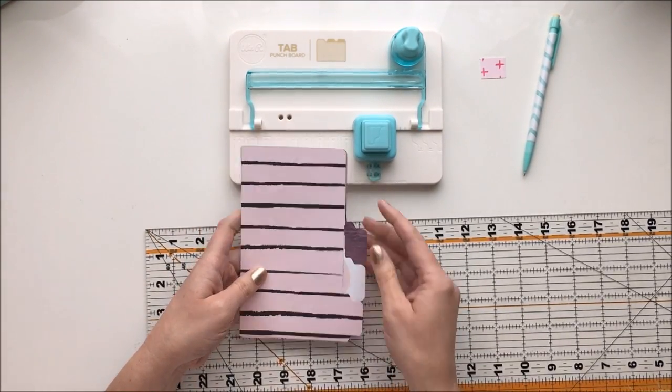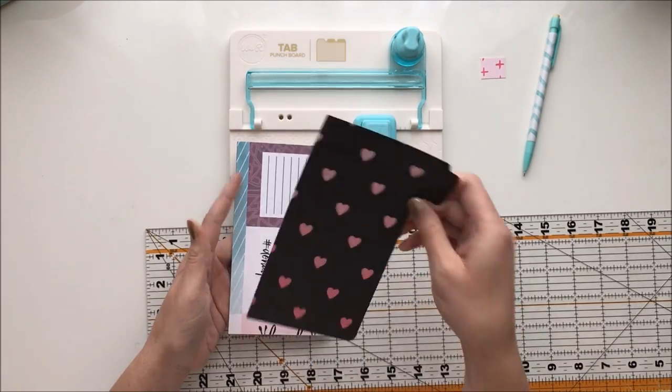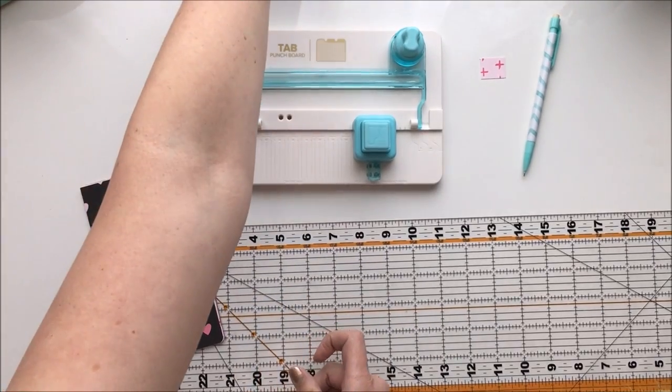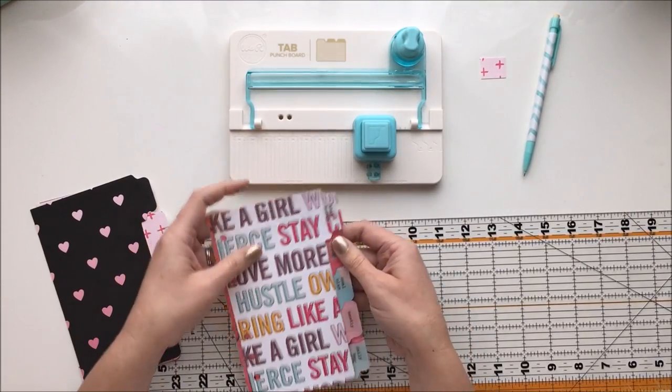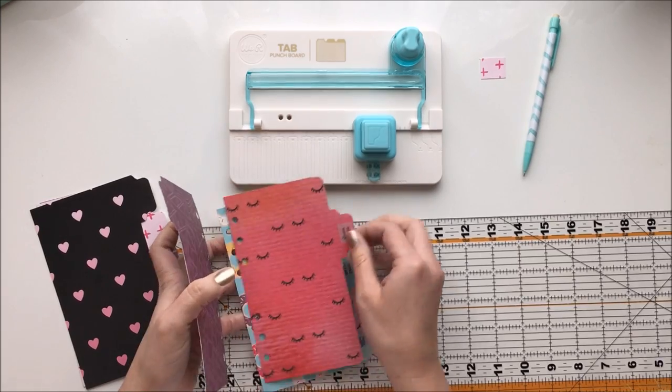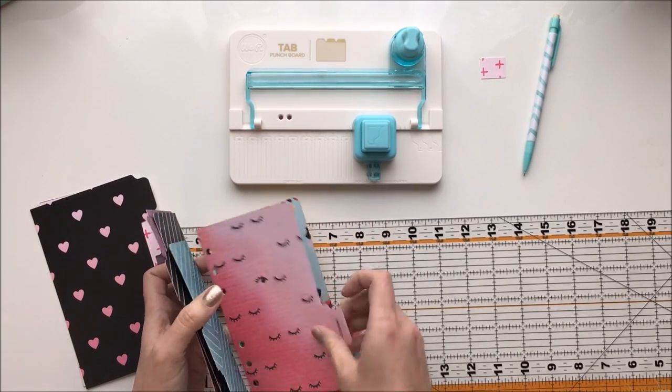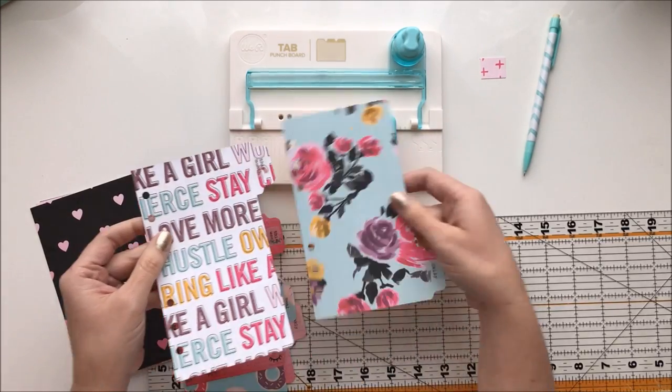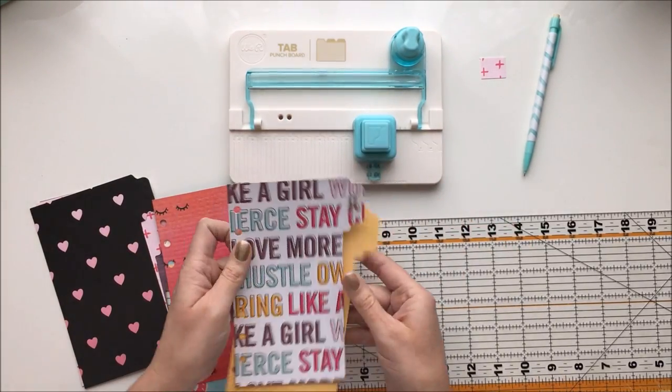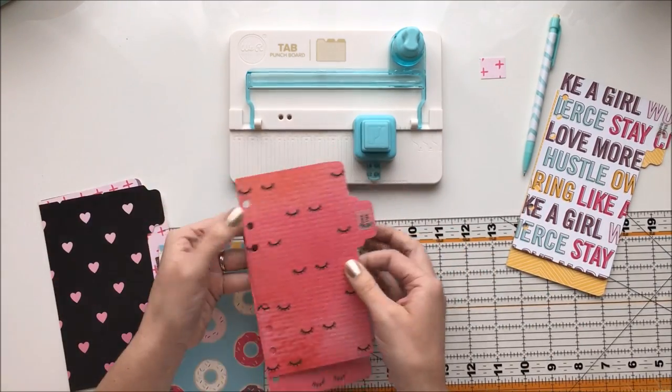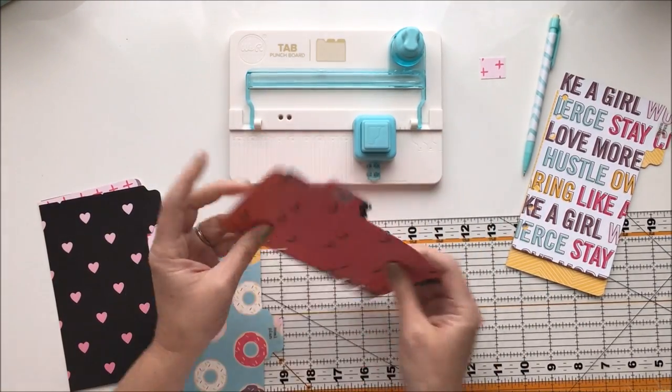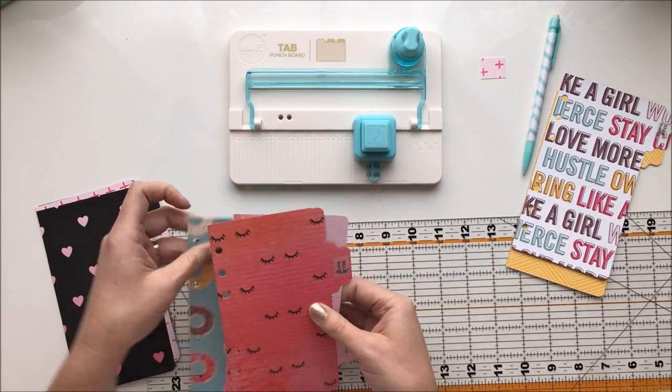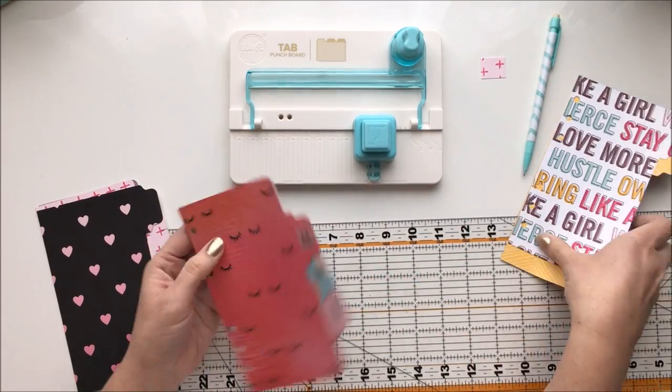So you follow the same instructions for those. And again, these are the dividers from my planner. And I'll show you back to back here so that you can tell that they really are the same punch. So when you make a top, you can make a bottom just by flipping it over. When you make an off center top, you can make an off center bottom just by flipping it over.